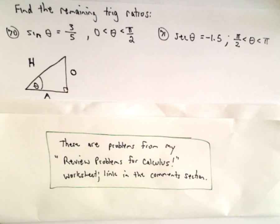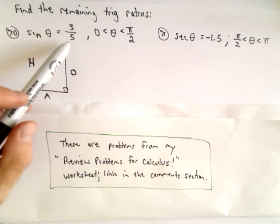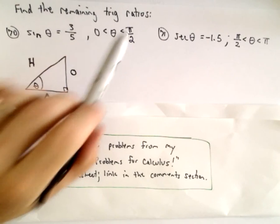Okay, here we're going to find some remaining trig values given a trig value to begin with. So we've got sine of theta equals three-fifths, theta is between zero and pi over two.